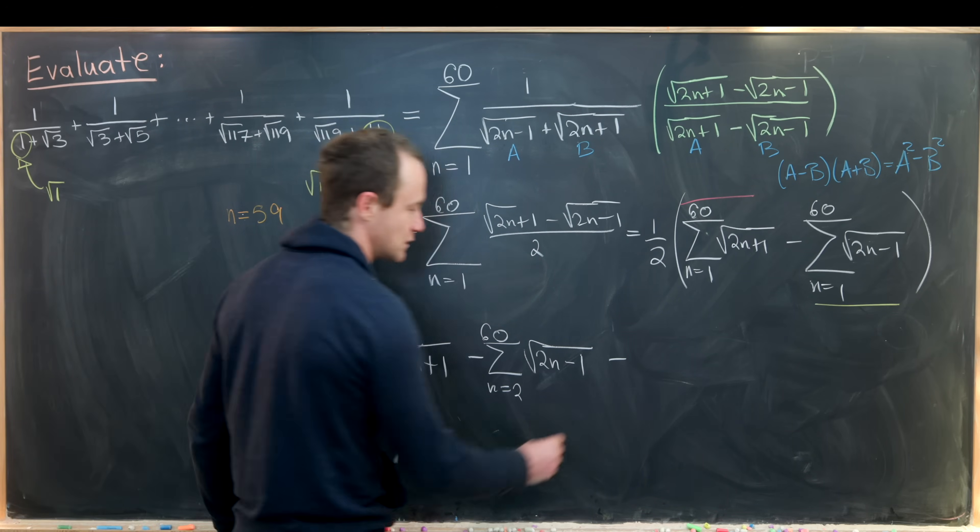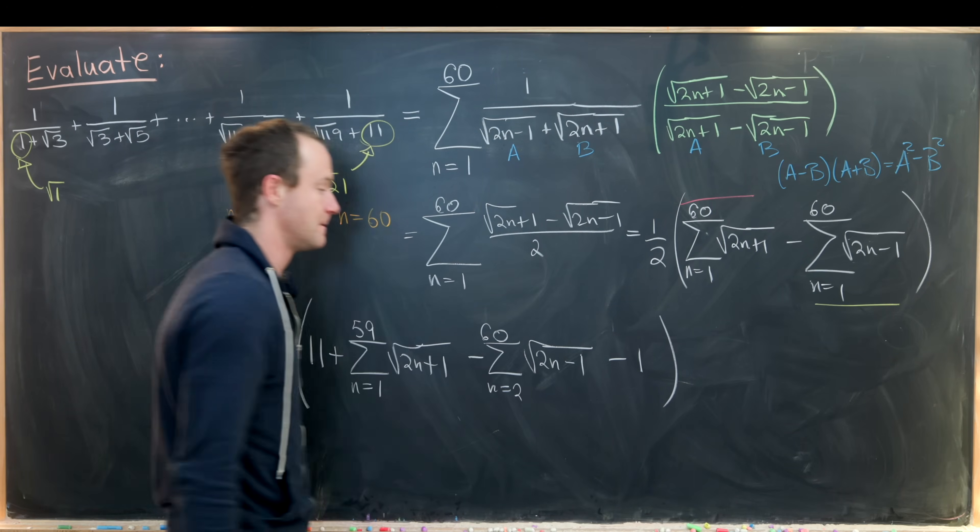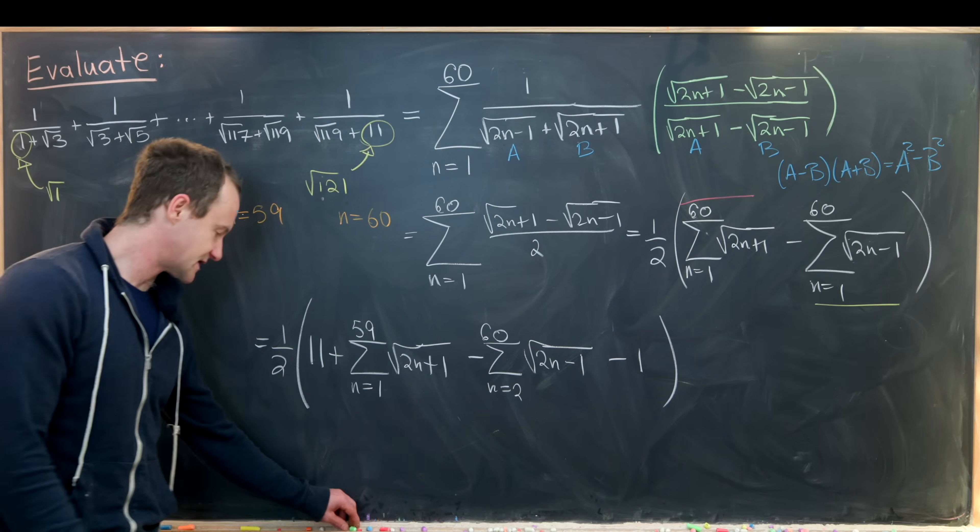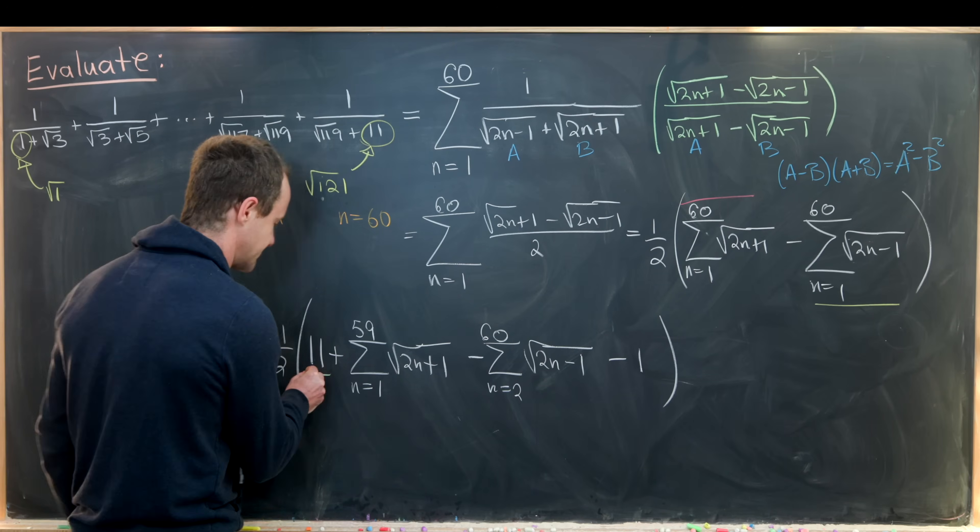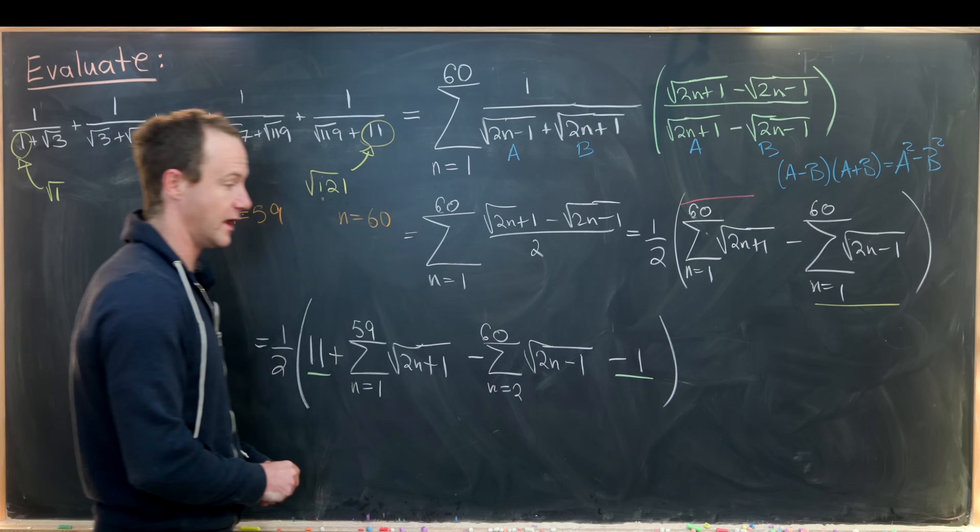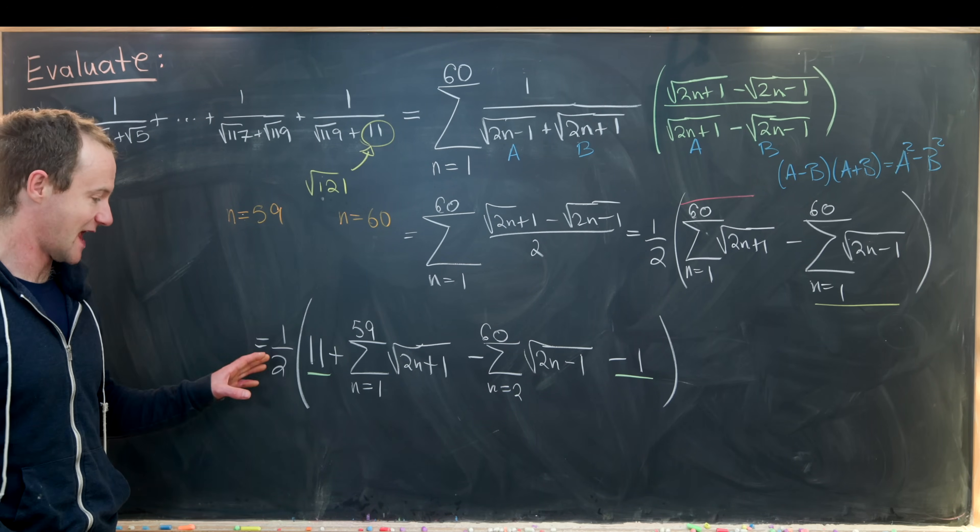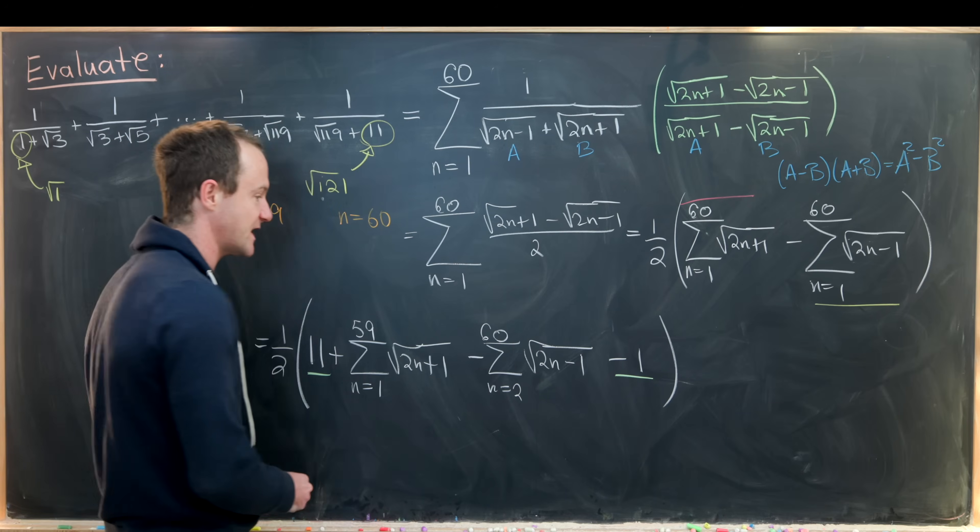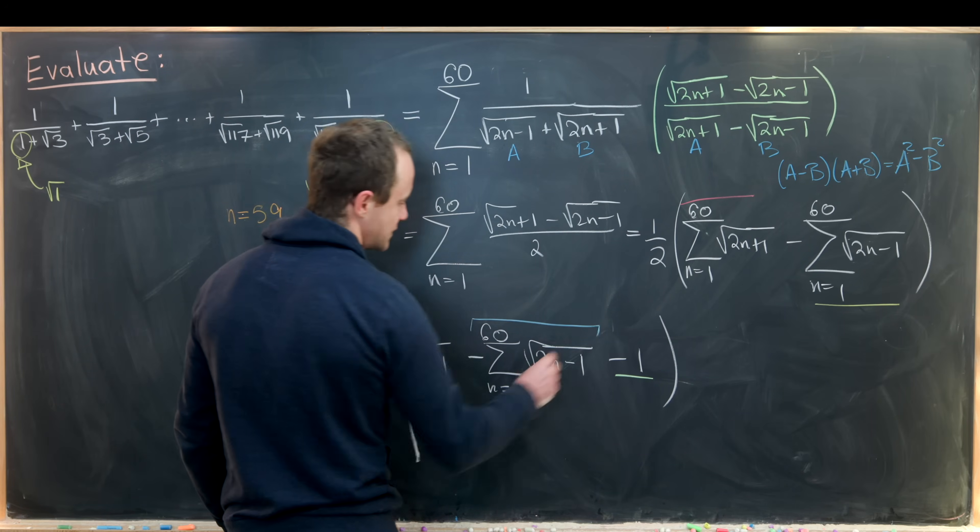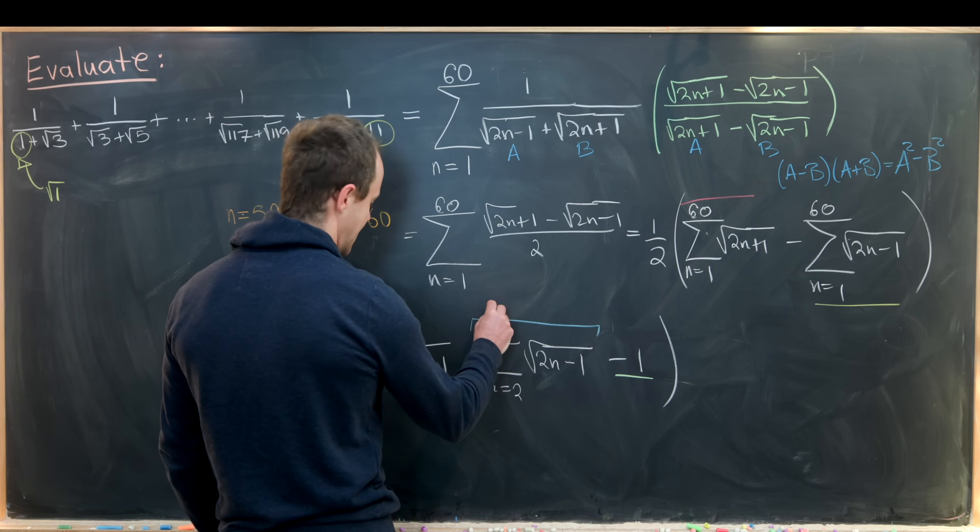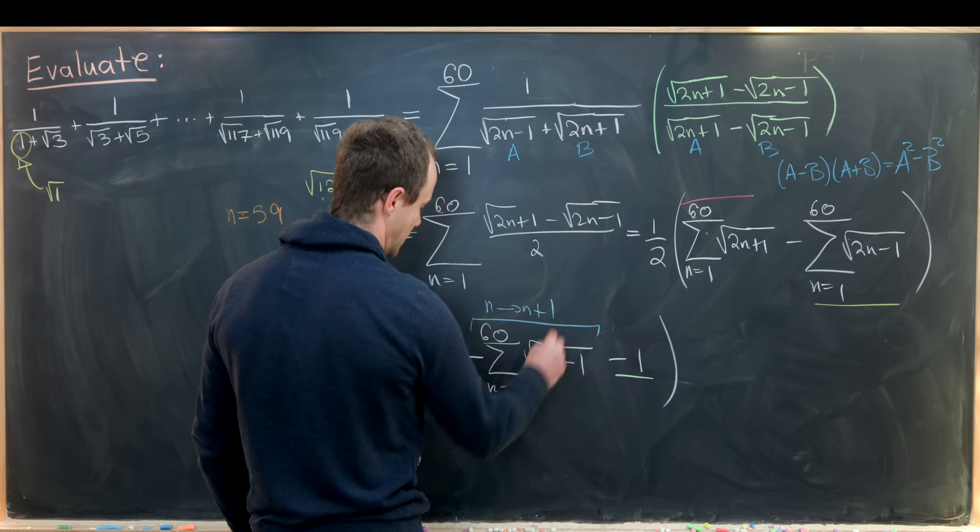The n = 1 term is just 1. We can combine these two numbers, 11 and -1, to get 10. Then we can re-index one of these by sending n to n + 1.